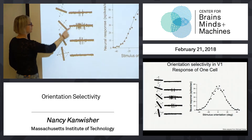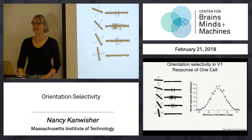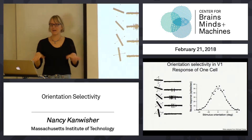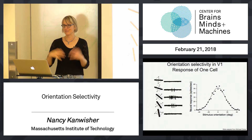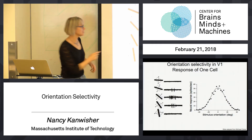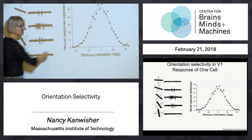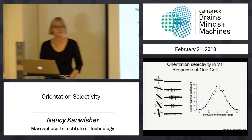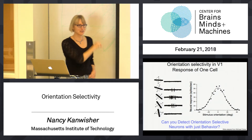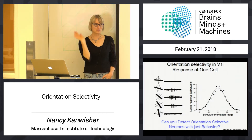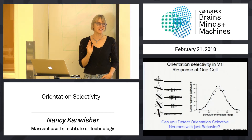This neuron fires a lot to one orientation, a little bit to another, and not at all to a third. 'Not at all' in the nervous system means background firing rate — the occasional spike that just happens, but a much lower firing rate. This represents much more firing to the preferred orientation than the non-preferred orientation. All of this involves sticking electrodes into cat V1 and recording the firing rate as a function of bar orientation.